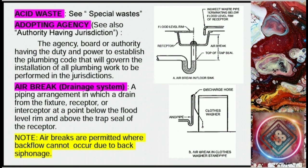Air brake in the drainage system: a piping arrangement in which a drain from the fixture, receptor, or interceptor discharges at a point below the flood level rim and above the trap seal of the receptor. Note: air brakes are permitted where backflow cannot occur due to back siphonage.